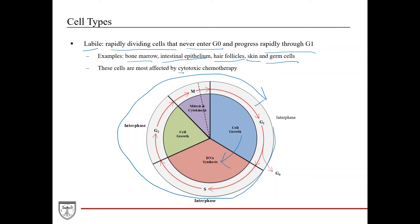Germ cells are also labile. These cells are most affected by cytotoxic chemotherapy versus targeted chemotherapy, which targets specific proteins that are molecular drivers of cancer. Targeted therapies don't necessarily affect rapidly dividing cells more than other cells—they target tumor-specific proteins. Cytotoxic therapy affects tumor cells but also labile cells, which is why cancer patients can have low white count, anemia, GI symptoms like vomiting and diarrhea, hair loss, and infertility.